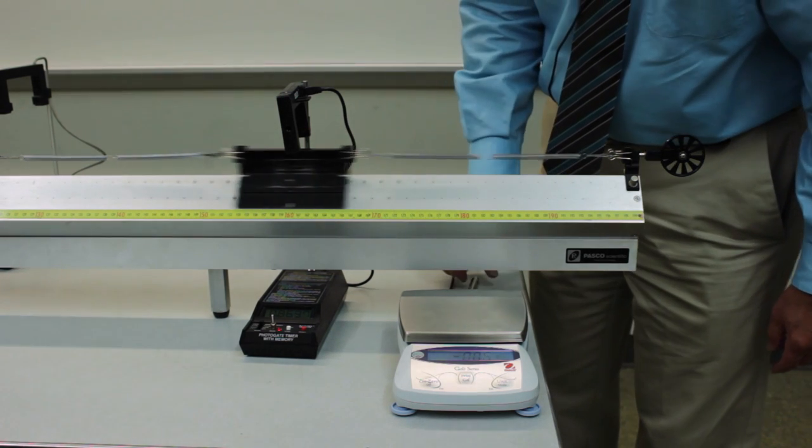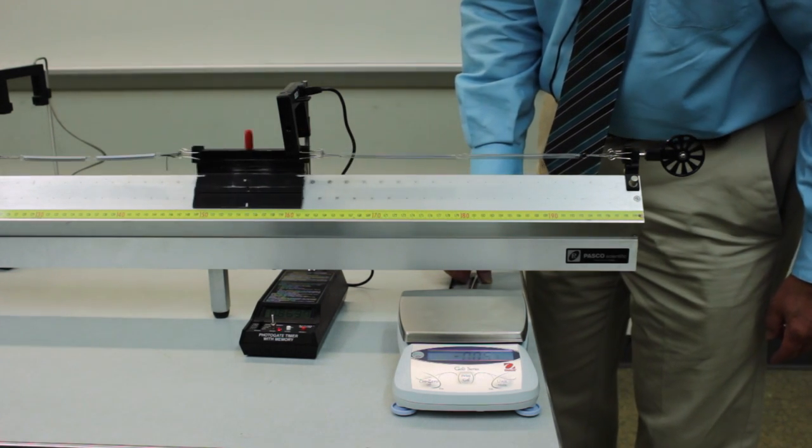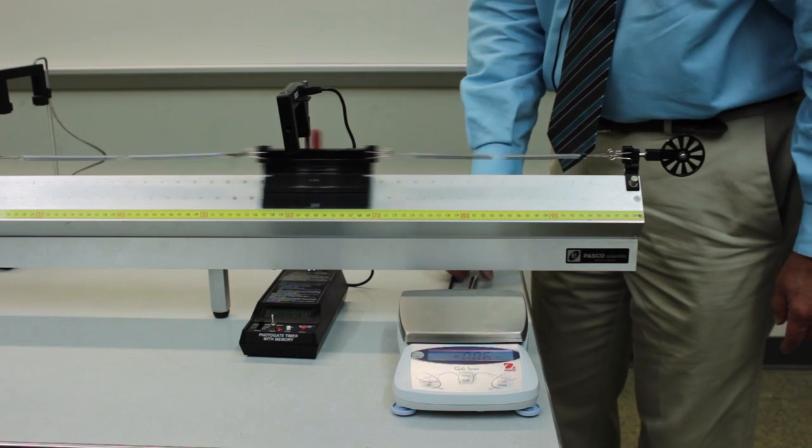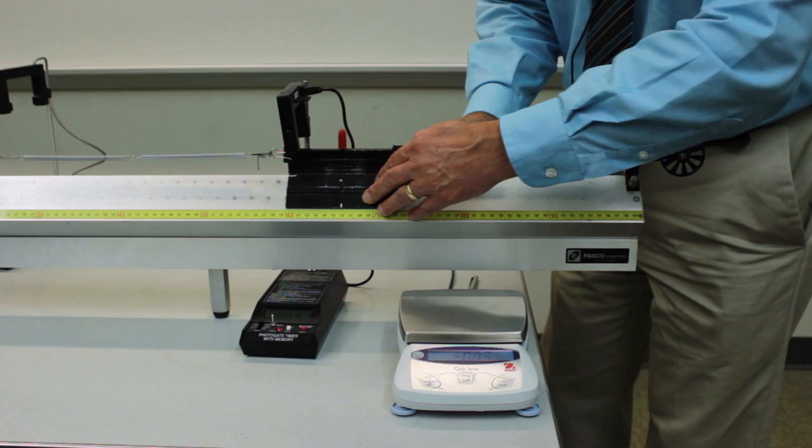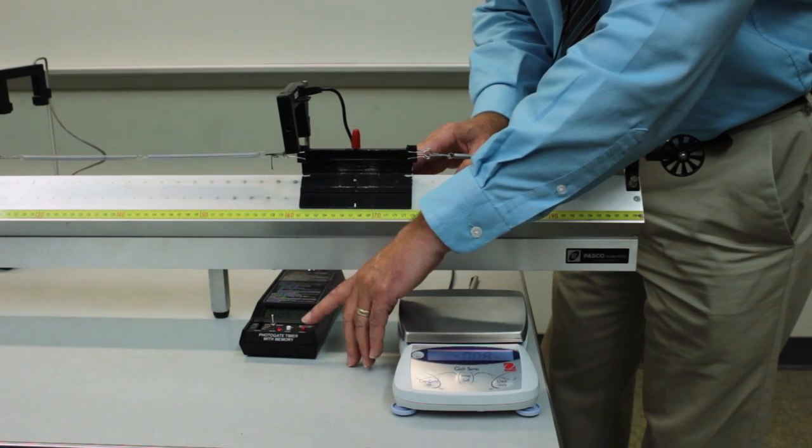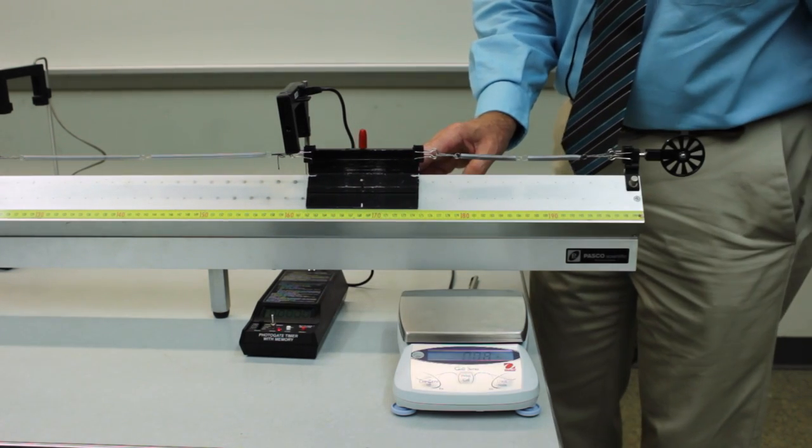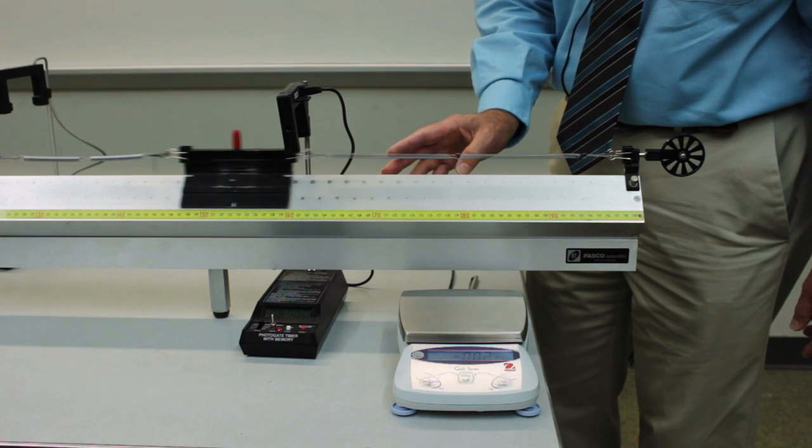And this particular period is about 0.86 seconds. So stop the glider and hit the reset button. Start it again. Make another measurement.